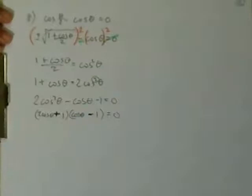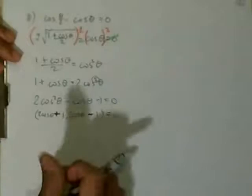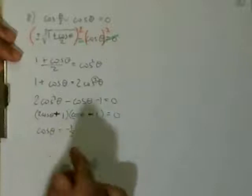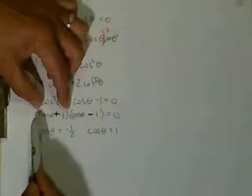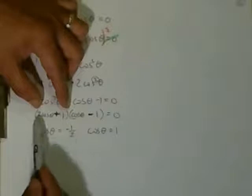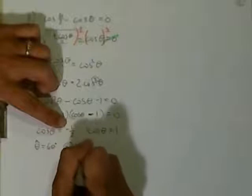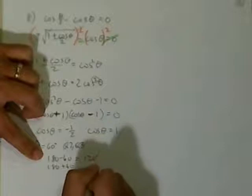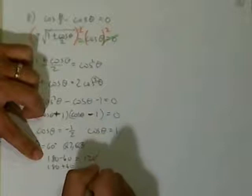We zip it out and set each factor equal to 0. For 2 cosine theta plus 1 equals 0: cosine theta equals negative 1/2. The reference angle is 60 degrees, and cosine is negative in quadrant 2 and quadrant 3. So 180 minus 60 is 120 degrees, and 180 plus 60 is 240 degrees. For cosine theta equals 1, theta equals 0 degrees. So the three answers are 0, 120, and 240.